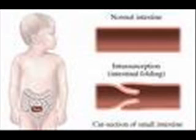Whether barium enema or air insufflation, you should not do them when there is vascular compromise, because vascular compromise means necrosis of the bowel, which means a high propensity for perforation and thereafter peritonitis leading to increased mortality. When you can't do barium enema or air enema, go for surgery — laparotomy — because surgery has the advantage of identifying things like Meckel's diverticulum.